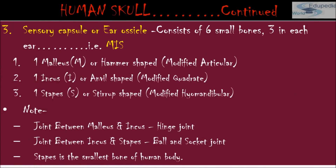Ear bones are another category of the skull. They consist of three bones: malleus, incus, and stapes — present in pairs, making six small bones in total (three in each ear). The joint between malleus and incus is a hinge joint, and the joint between incus and stapes is a ball and socket joint. Stapes is the smallest bone of the human body, found in the internal ear.